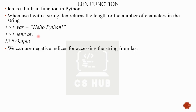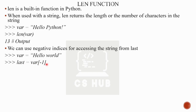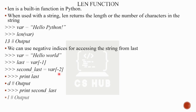Since we defined the string length, the last index is length minus 1. To access the string from the last element, the last element is var[-1]. The second last is var[-2], which prints 'D'. The second last is 'L'. We can use negative indexing to access characters from the end of the string.